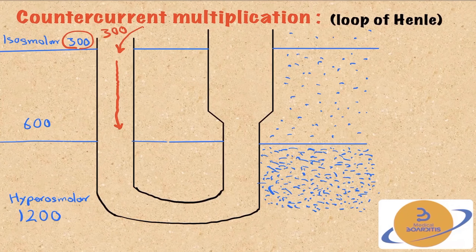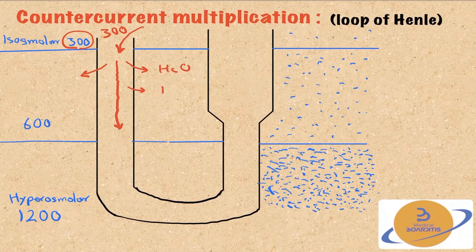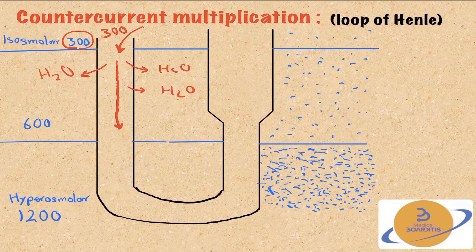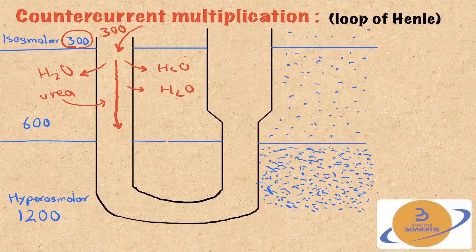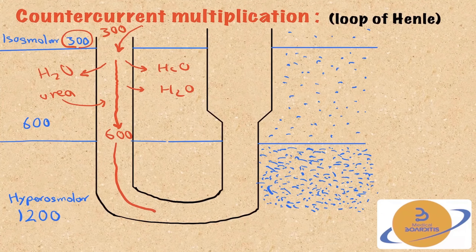Here is a simplified illustration of counter-current multiplication. The process starts with the movement of filtrate from the proximal convoluted tubule into the thin descending limb of the loop of Henle. The osmolarity of the tubular fluid at this stage is almost equal to that of the extracellular fluid — let's say 300. As we move down the thin descending limb, osmolarity increases progressively because this segment is only permeable to water and urea, so water moves out and urea moves in from the interstitium.